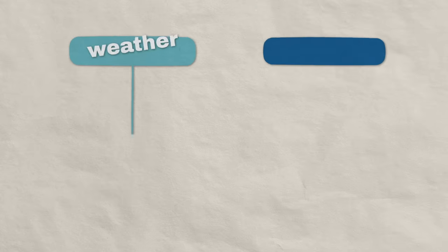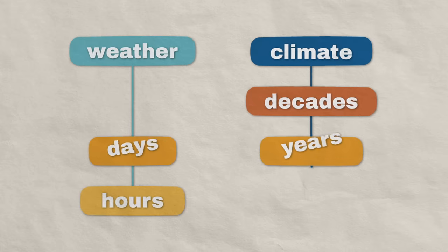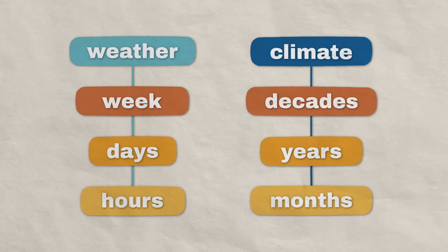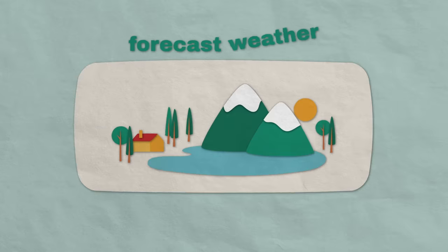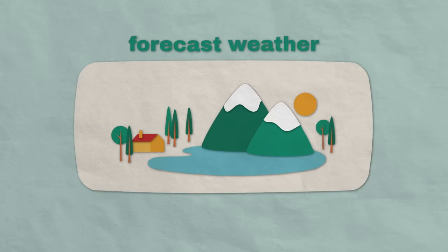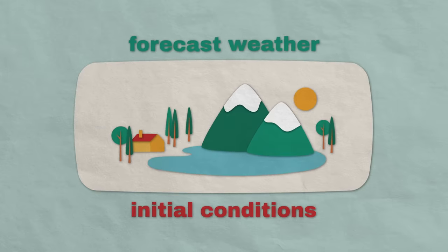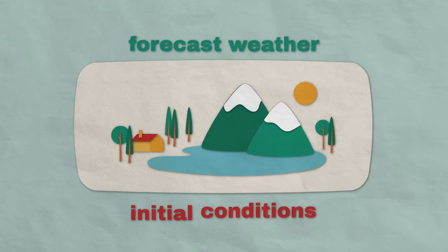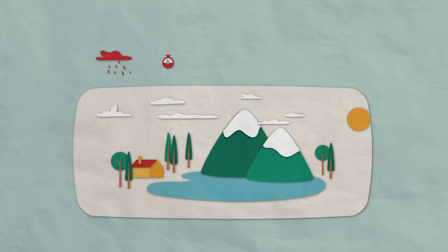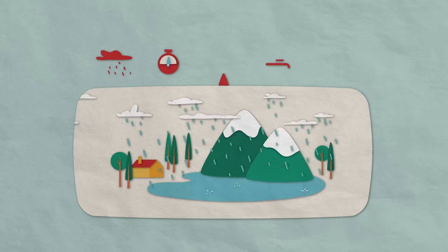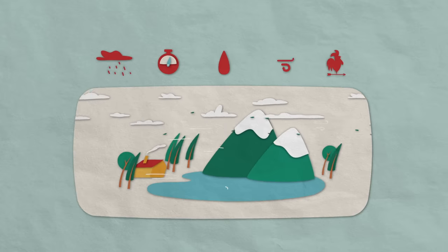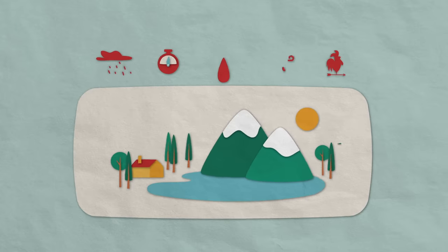These two types of predictions give us such different information because they're based on different data. To forecast weather, meteorologists need to measure the atmosphere's initial conditions. These are the current levels of precipitation, air pressure, humidity, wind speed, and wind direction that determine a region's weather.